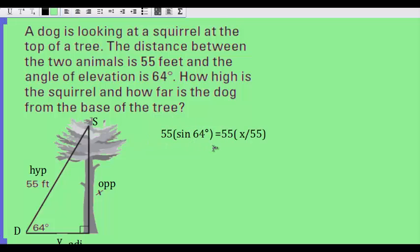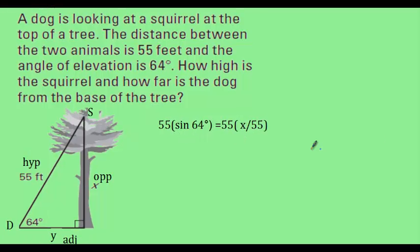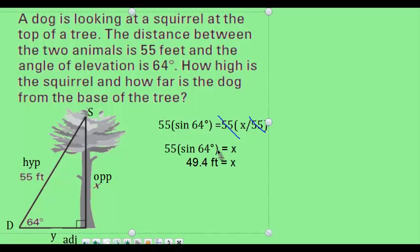To solve for X, we multiply both sides by 55, giving us 55 times the sine of 64 degrees equals X. That means the height of the squirrel in the tree is approximately 49.4 feet.